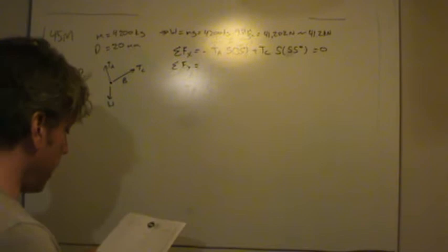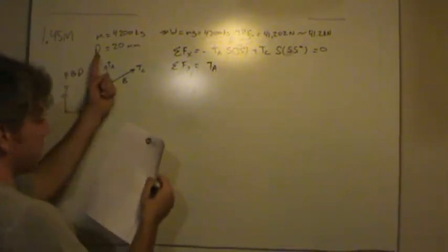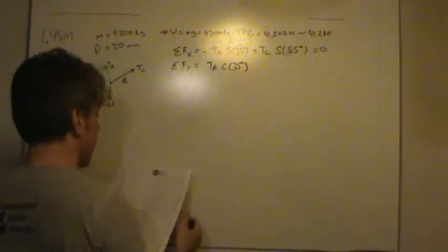Now, summing forces in the y direction, we'd have TA has a positive component. We want the cosine portion of that vector.